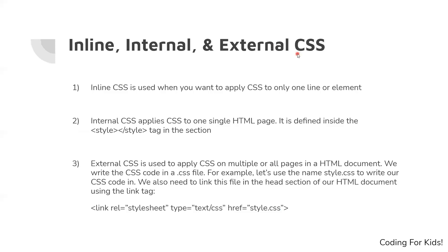Now let's look at inline, internal, and external CSS. There are three types of CSS. The first is inline CSS, which we have actually used before. Inline CSS is used when you want to apply CSS to only one line or one element. For example, you might put style equals background-color pink inside an opening body tag. Inline CSS only applies to that one element — you can't apply it to multiple elements that way.